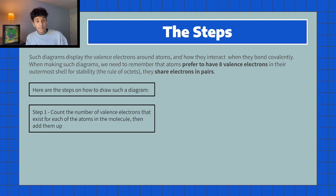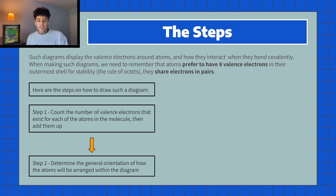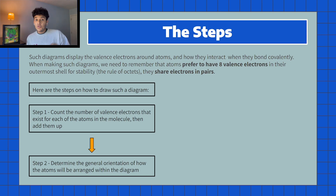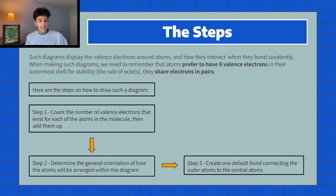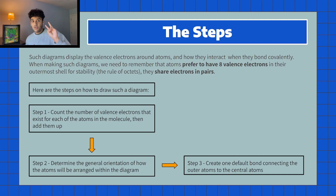Here are the steps. The first one is to count the total number of valence electrons that the molecule has — count the number of each type of atom, find their valence electrons, and add them up. The second step is to determine the general orientation of how the atoms will be arranged. In most cases, the atom with the smallest subscript goes in the middle. So for H₂O, oxygen goes in the middle because it has the smallest subscript.